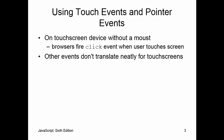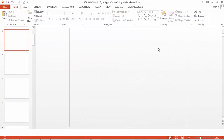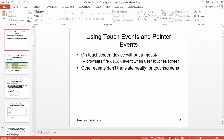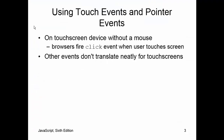Be aware that people — especially those with large hands — who are trying to use mobile phones may find it harder than using a desktop website. On a touchscreen device without a mouse, browsers fire a click event when the user touches the screen. Other events don't translate nearly as well for touch screens, and even some desktop machines today are being set up with touch screens where the mouse is minimized or absent.